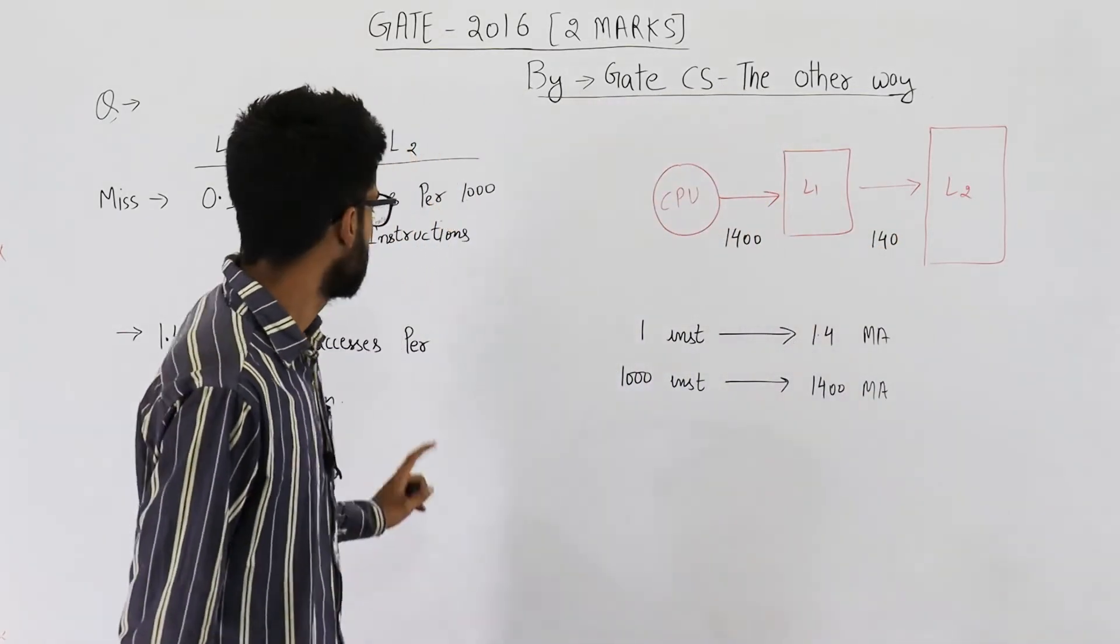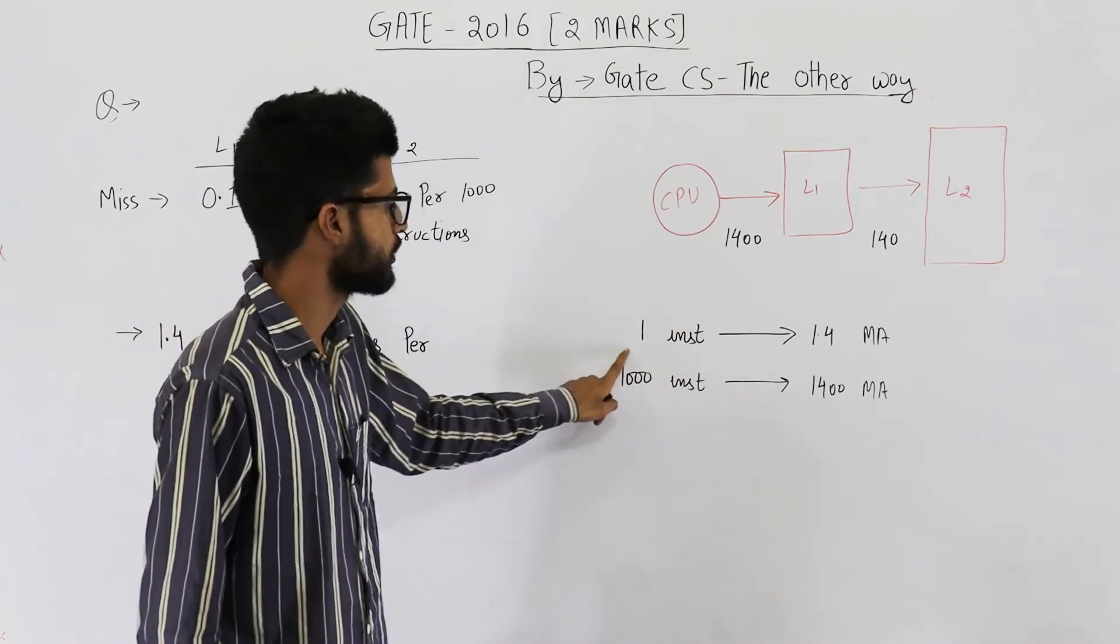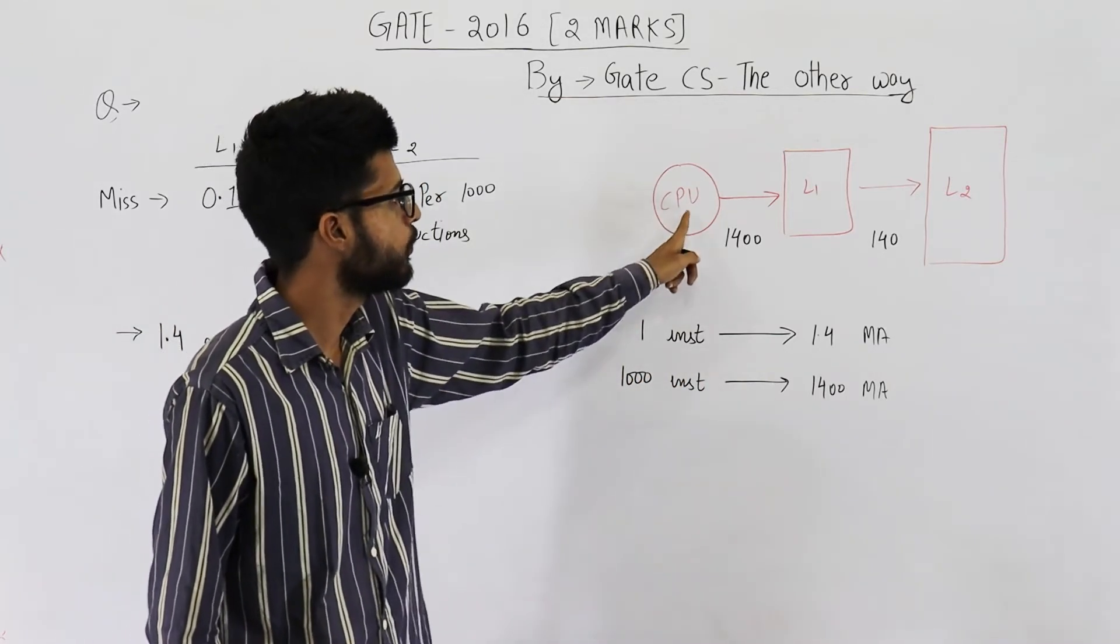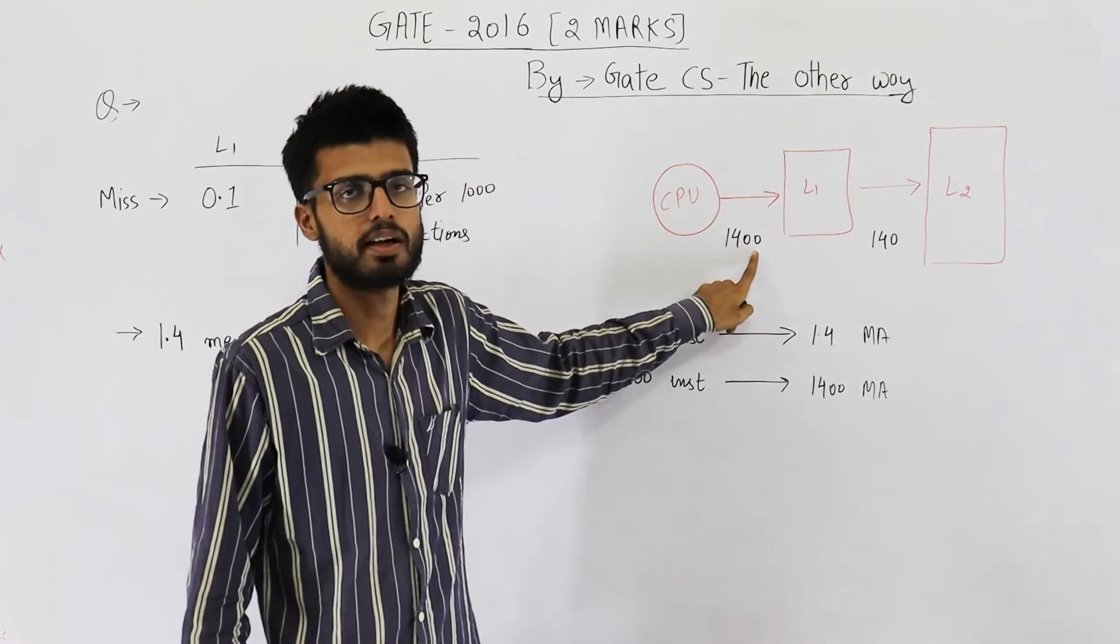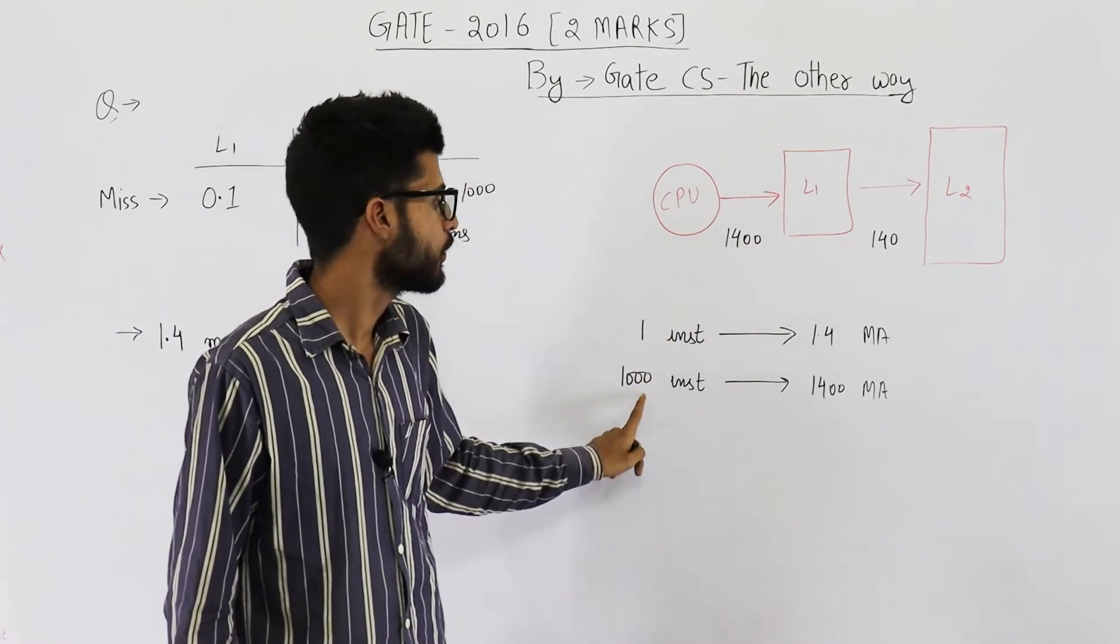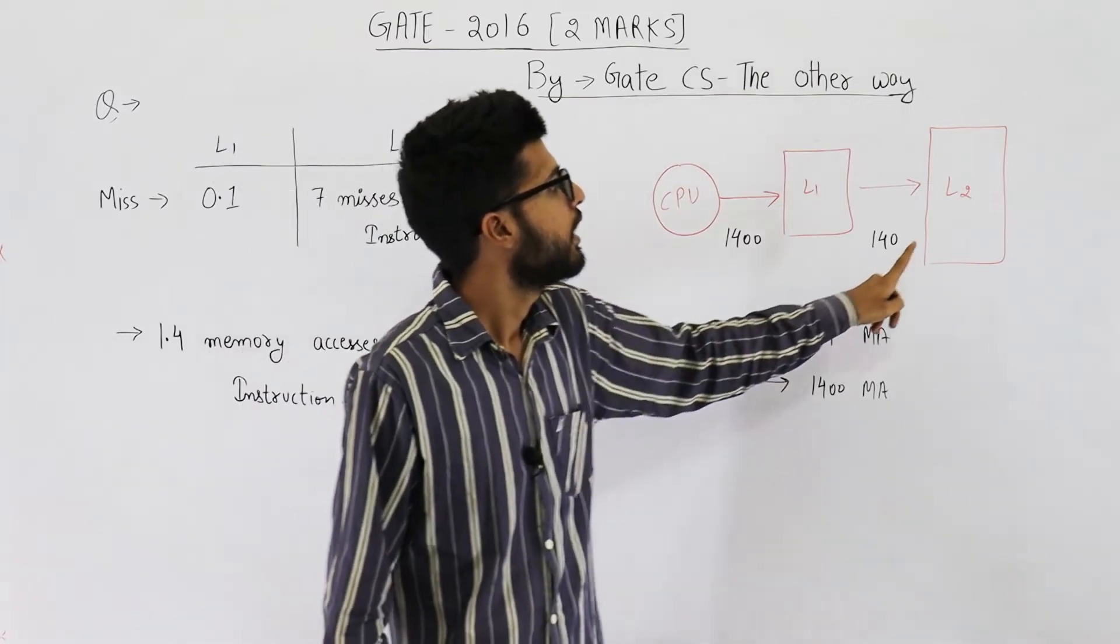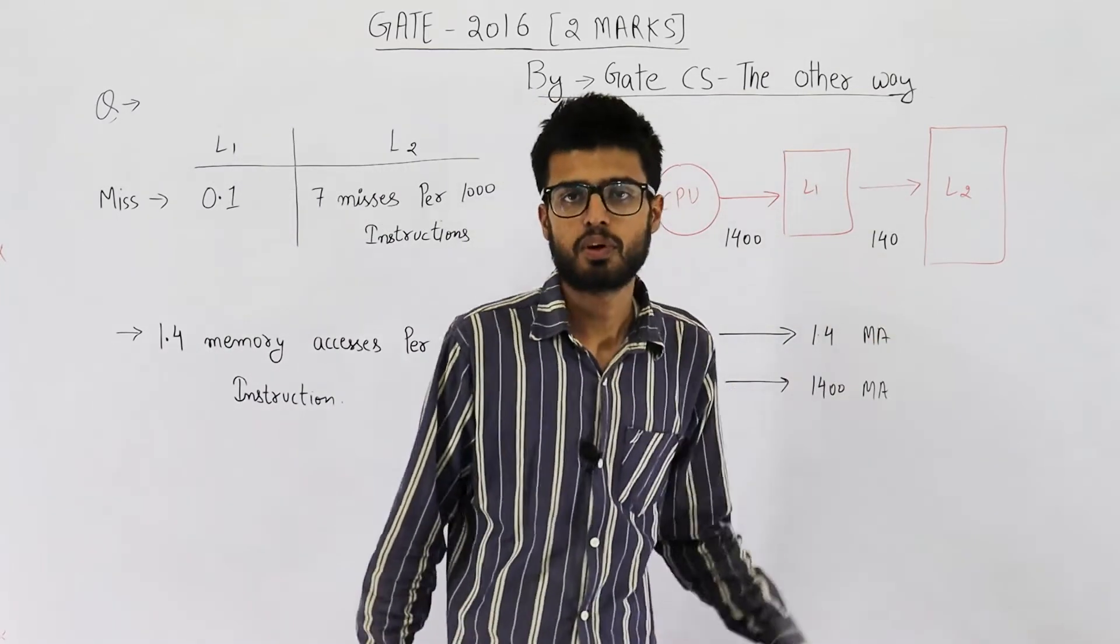This means for 1000 instructions CPU asks for a word from L1 1400 times, and also for 1000 instructions L2 is accessed only 140 times.